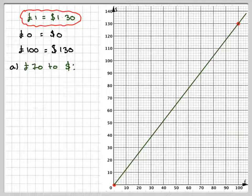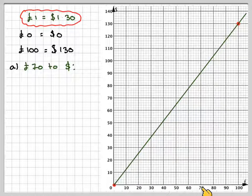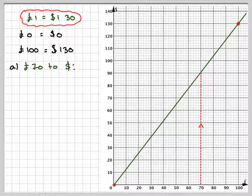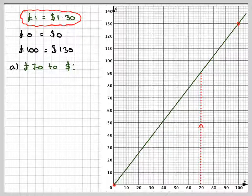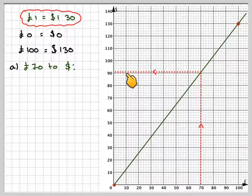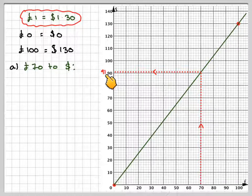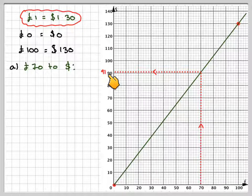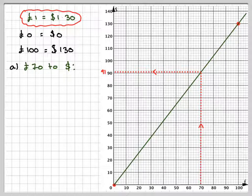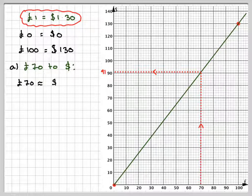To convert 70 pounds to dollars, you need to start with pounds being 70, then draw a dotted line up to the line, and then draw a horizontal line to here. That will be about 91 dollars. This is a graphical method, so they might accept 90, 91, or 92. Read the scale carefully. So 70 pounds is approximately equal to 91 dollars.